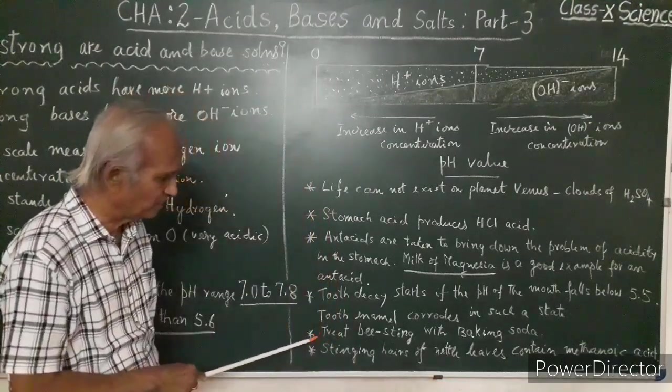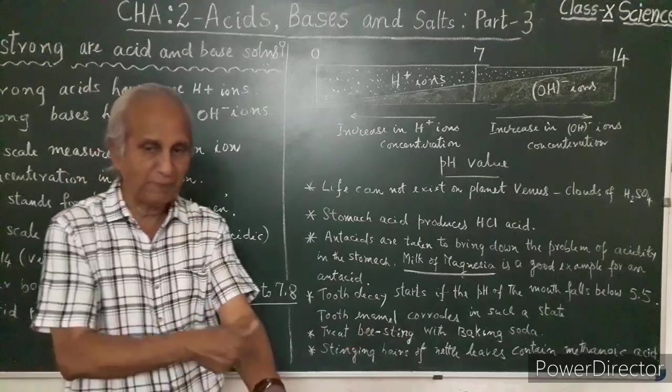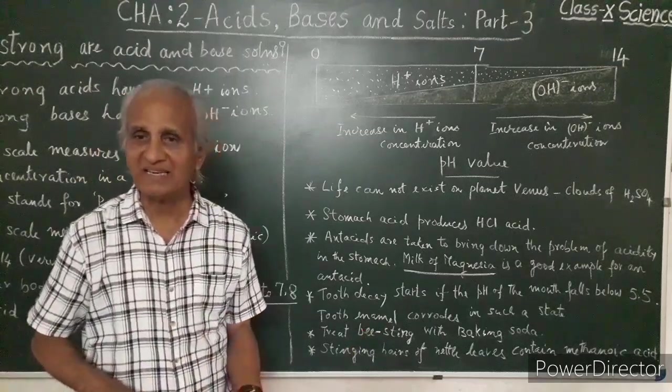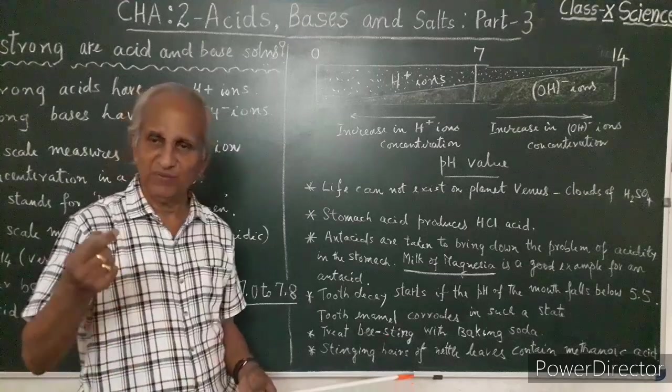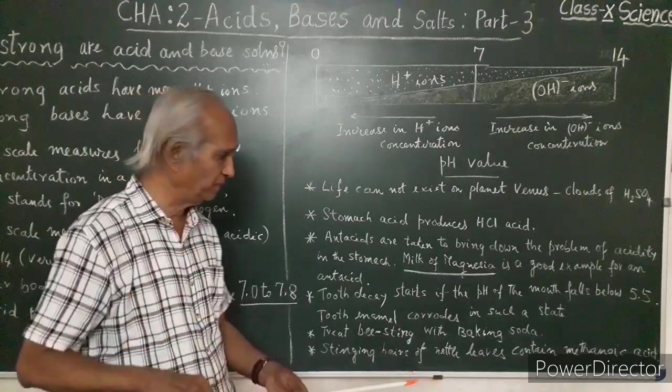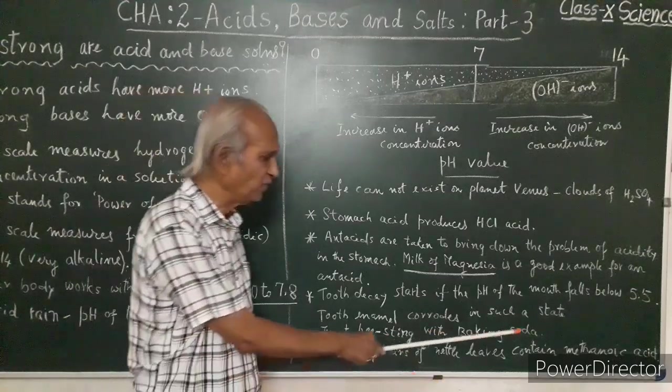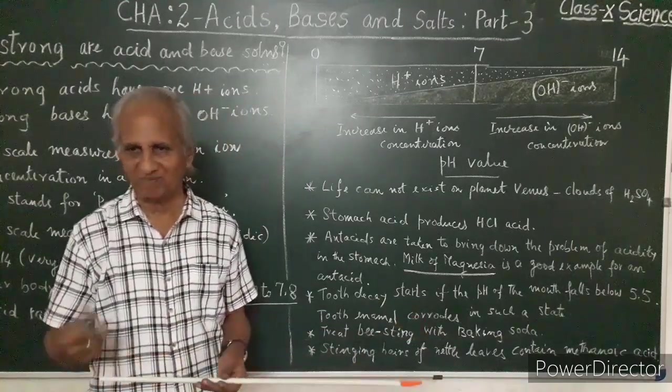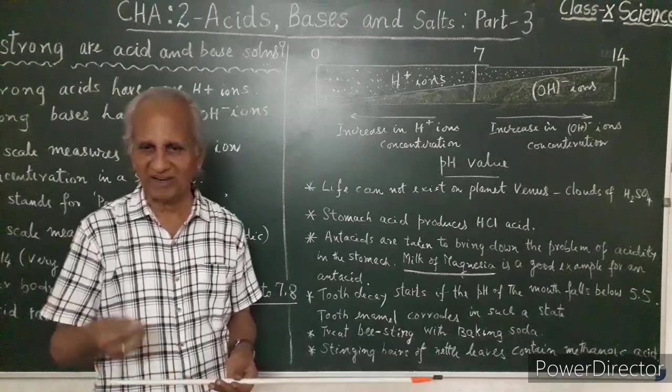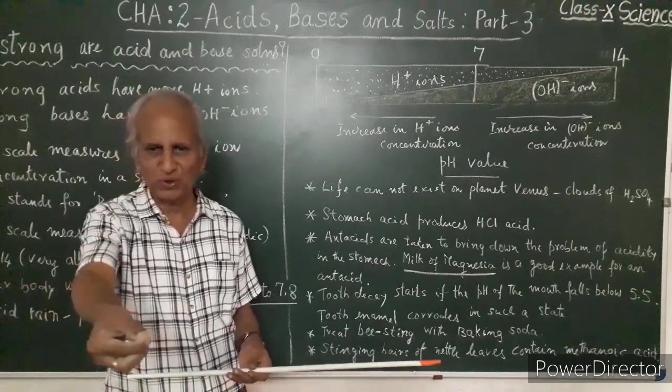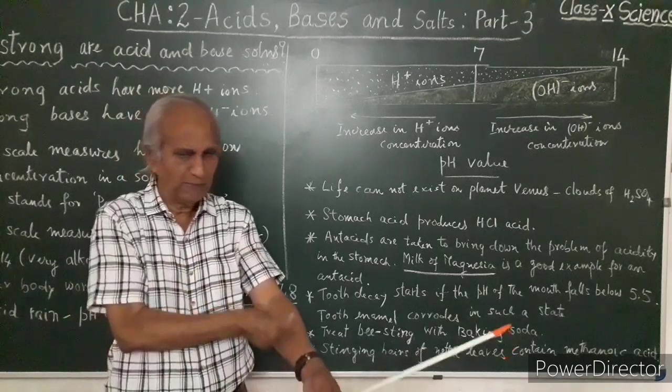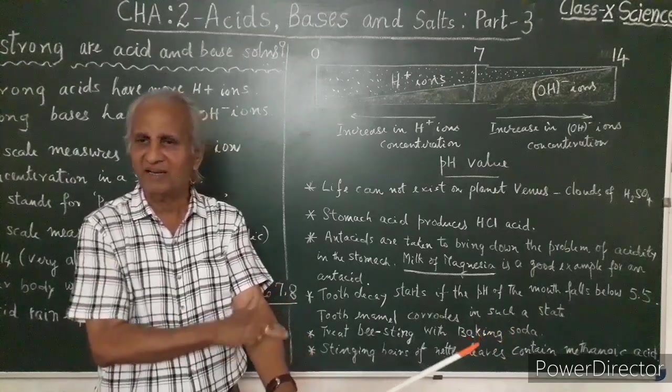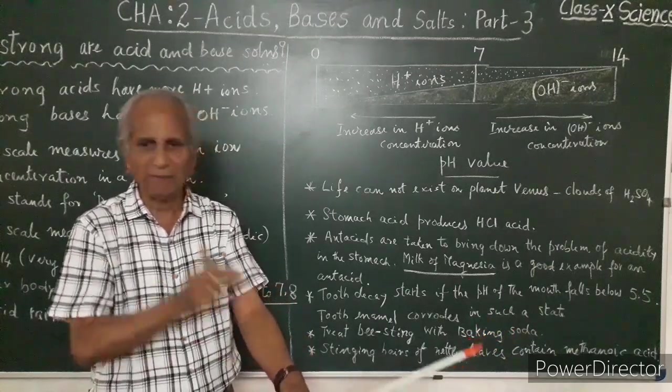Treat bee sting. Bee sting will inject acid into your body. You have to treat it with baking soda. Acid plus base gives you salt and water. Immediately go for baking soda, put it over that and just rub it.